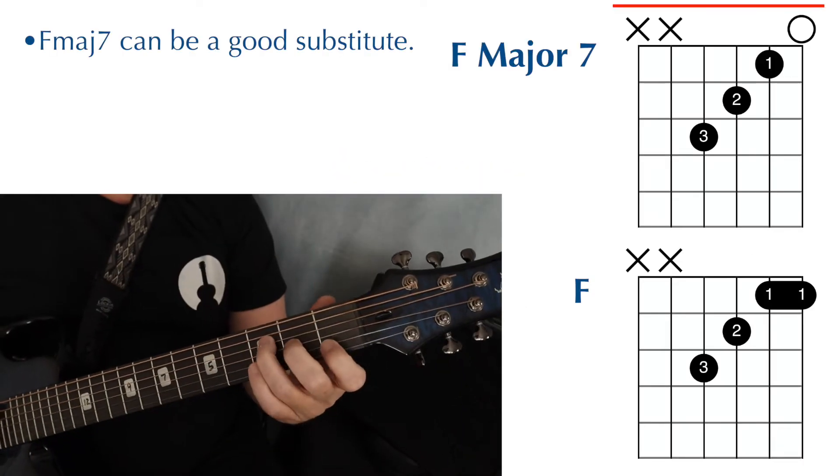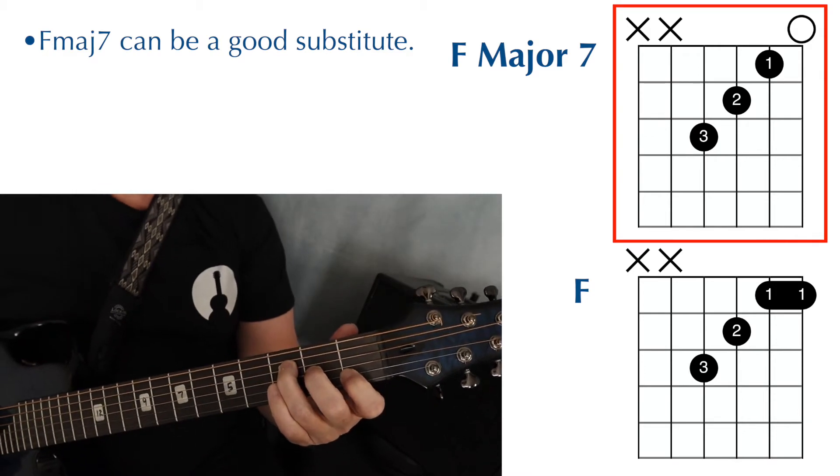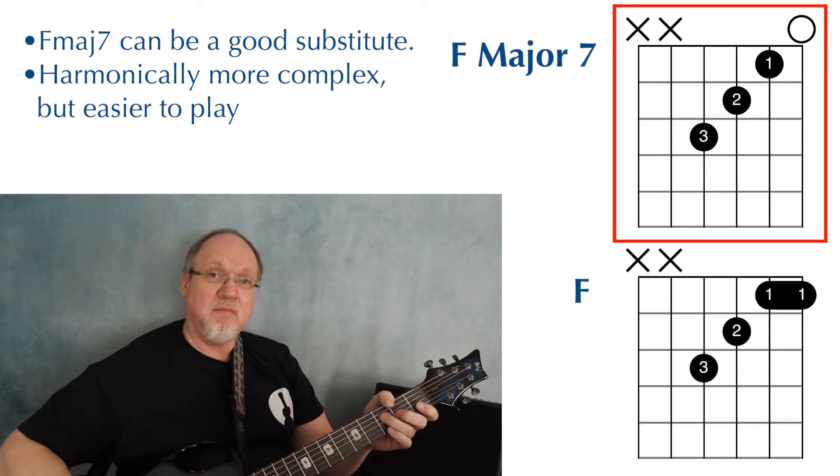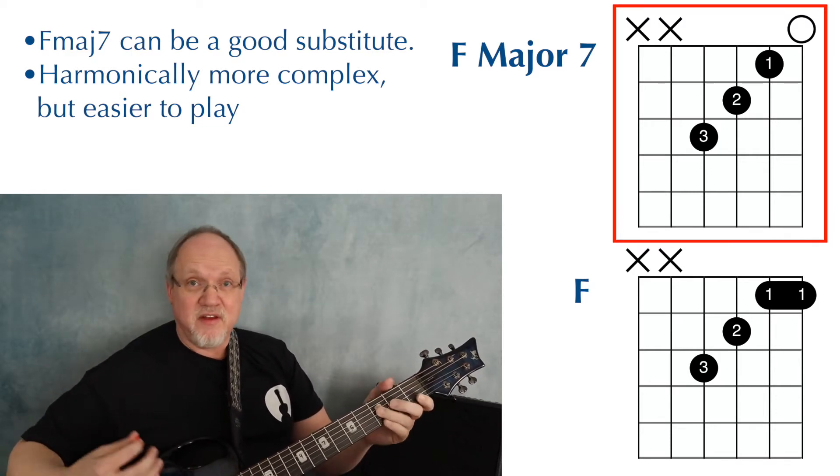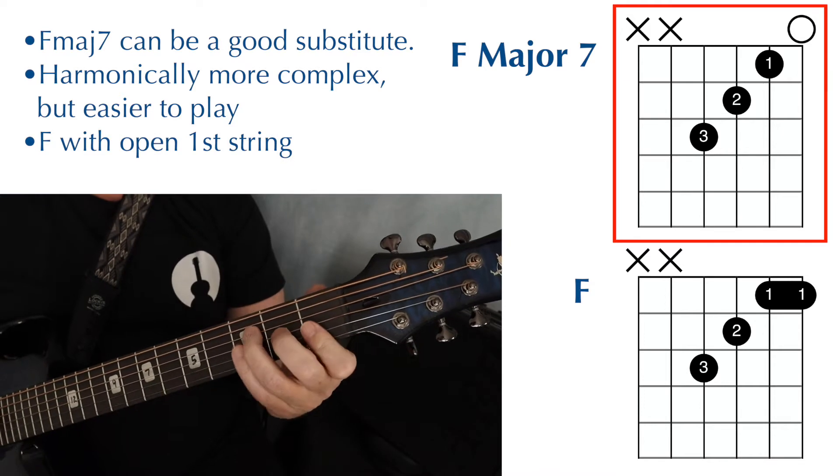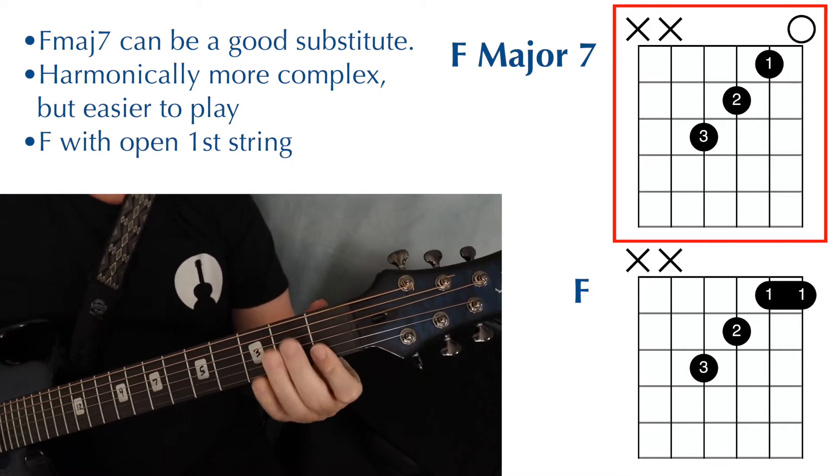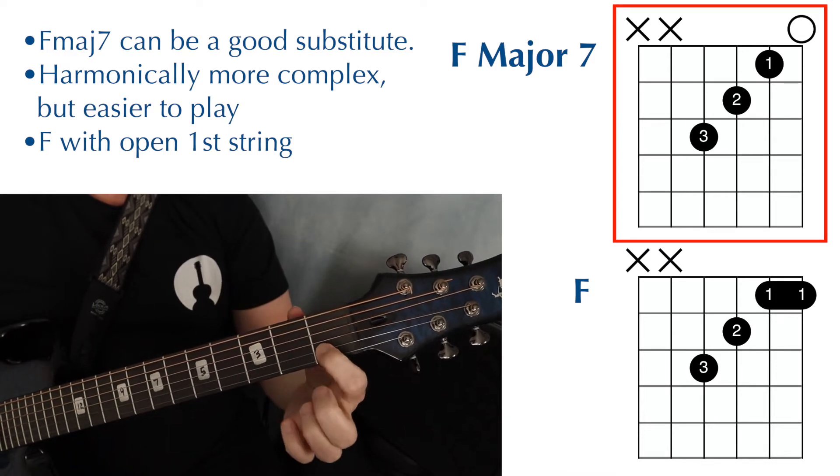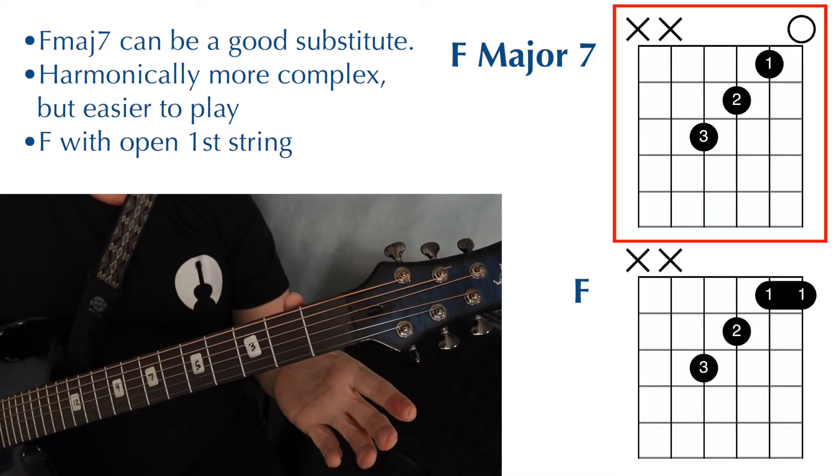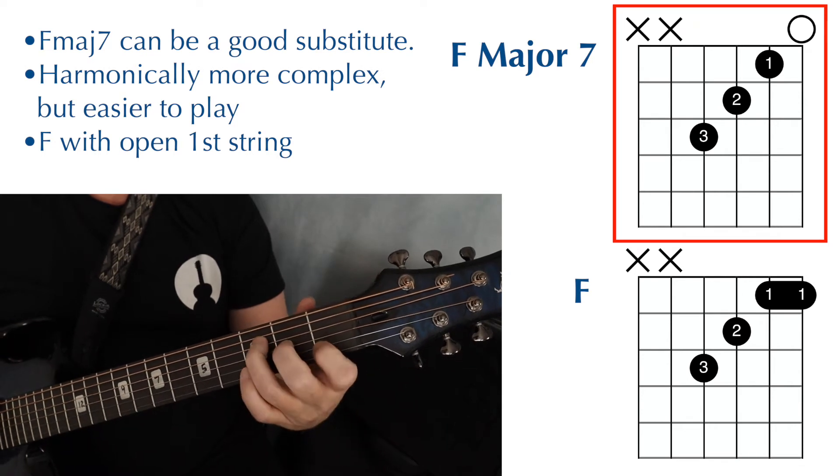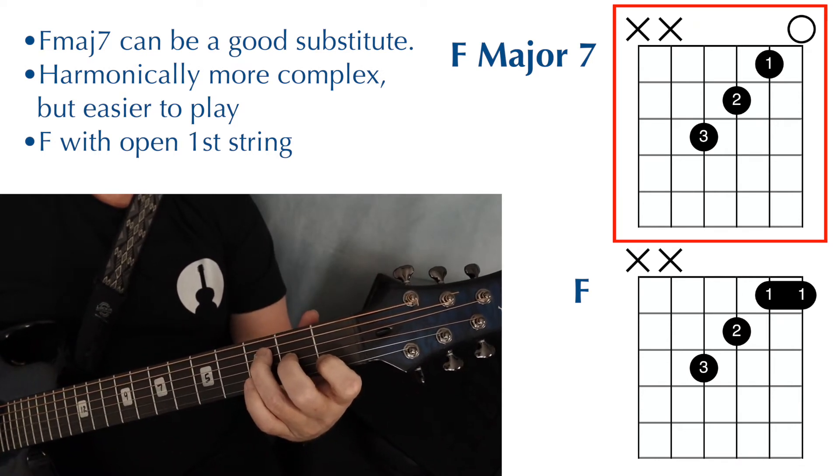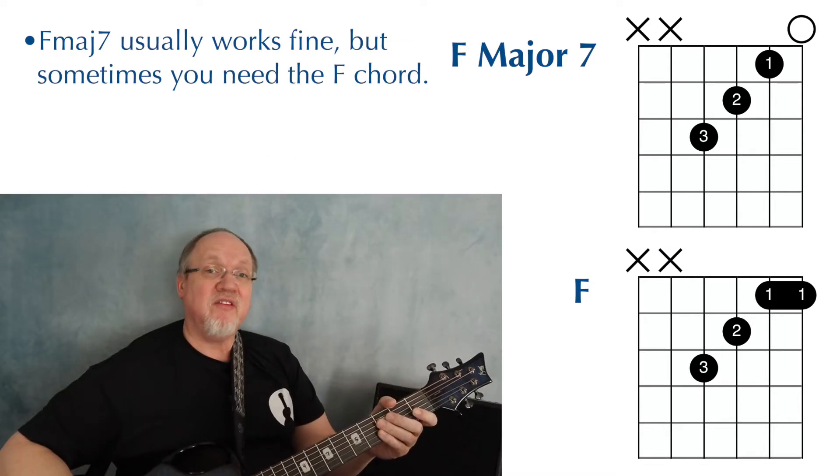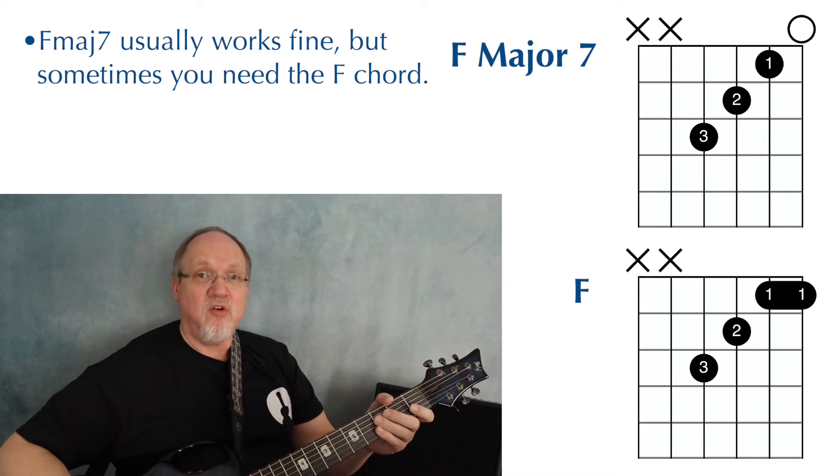Sometimes you can play an F major seven in place of the F chord. The F major seven is harmonically more complex, but ironically, it's easier to play than your F chord. It's really just the F chord, but instead of barring strings one and two, you put your first finger on the second string and play the first string open. It's an easy chord and it's kind of pretty. A lot of times the F major seven sounds good. And sometimes you really do need the F chord.